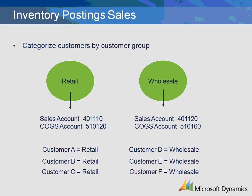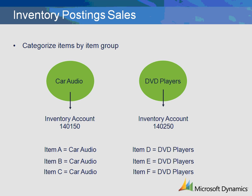By having separate customer groups set up for retail versus wholesale customers, you can choose to post to different ledger accounts rather than mapping each customer to the same ledger accounts for revenue and cost of goods sold. Let's also say that you must post the inventory issues or relief of inventory based upon the item groups because you need to separate purchased car audio items from DVD players, but there is no impact based on your customers or customer groups. You can then set up your inventory issue transactions to post to the correct ledger accounts based on the item group rather than having to map each individual item to a ledger account.